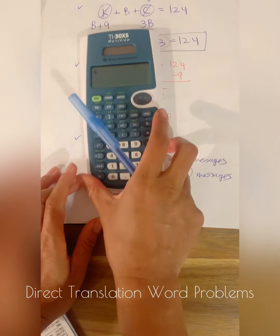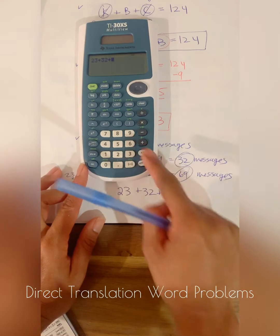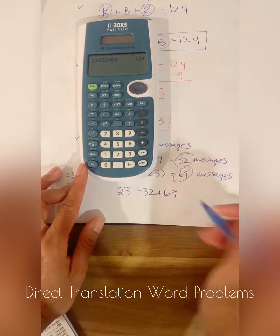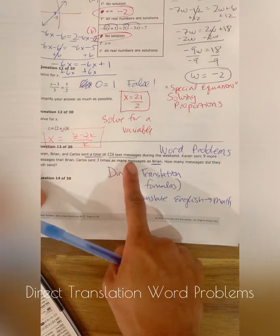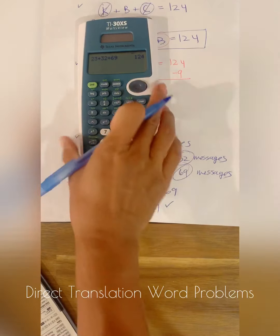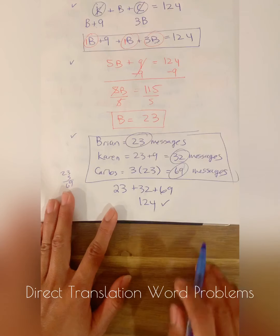23 plus 32 plus 69, I get 124. Is that correct? We sent a total of 124 messages. It is correct. So I just checked my work and this becomes my final answer.